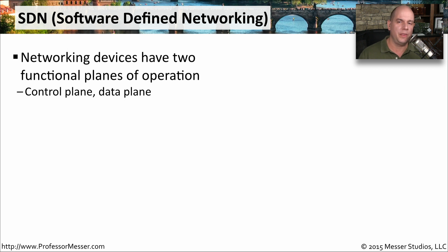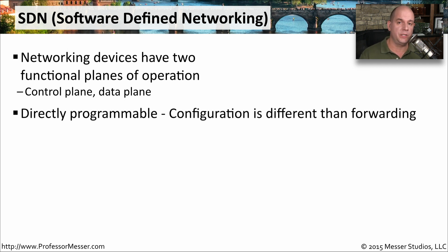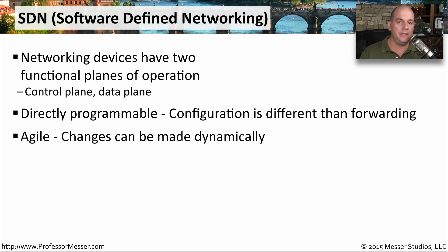There are a number of characteristics associated with software-defined networking. One is that it is directly programmable, going back to the separation between the control plane and the data plane — making configuration changes is separate from the part that actually forwards data. Another characteristic is that it is very agile: you can add devices, remove devices, and completely change the network layout in real time. If you need a new firewall, click a button and a new firewall appears. When you need to make changes to the network infrastructure, drag a few lines, click a button, and the network is completely reconfigured.